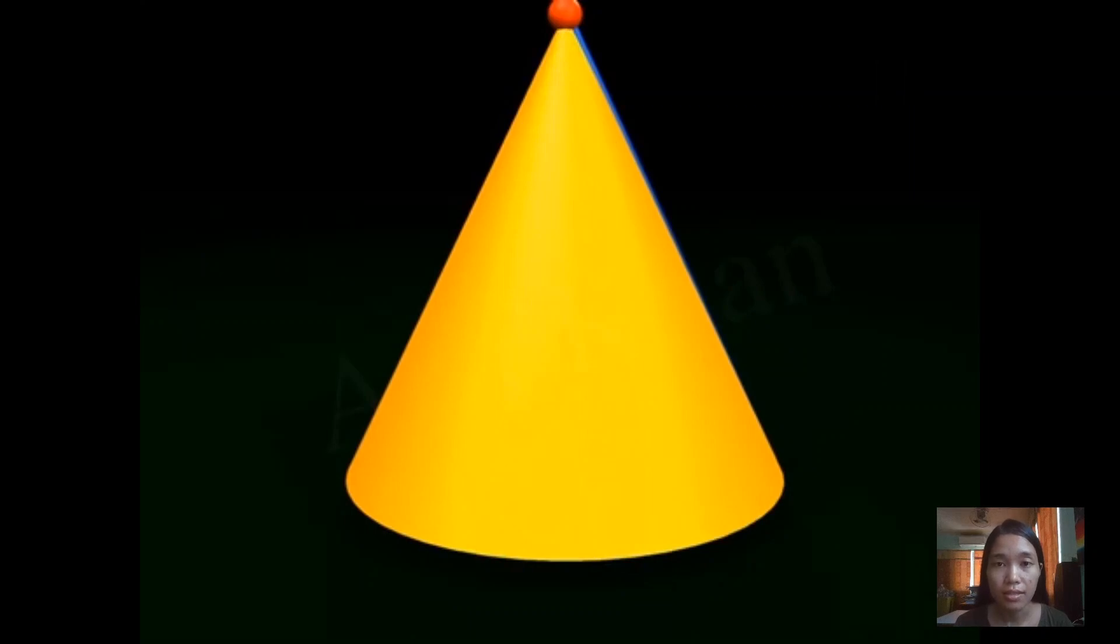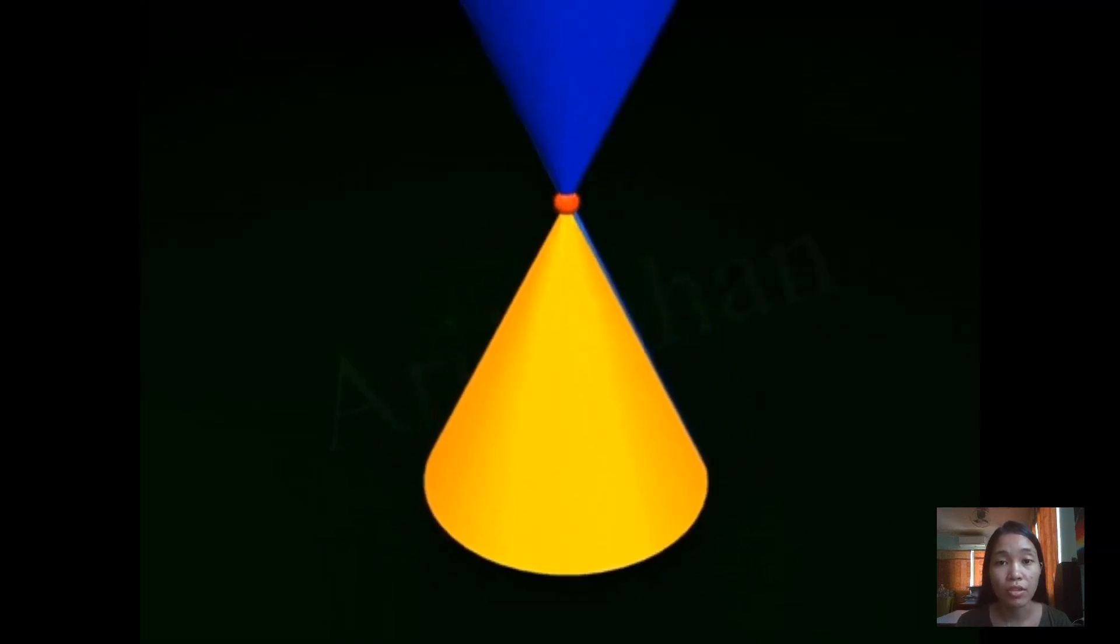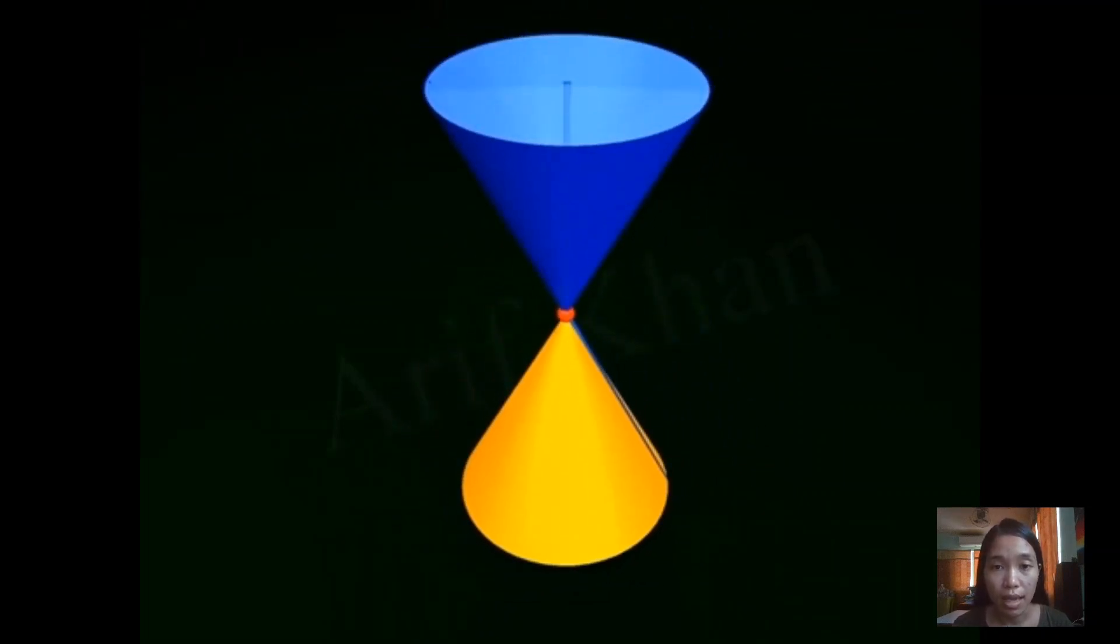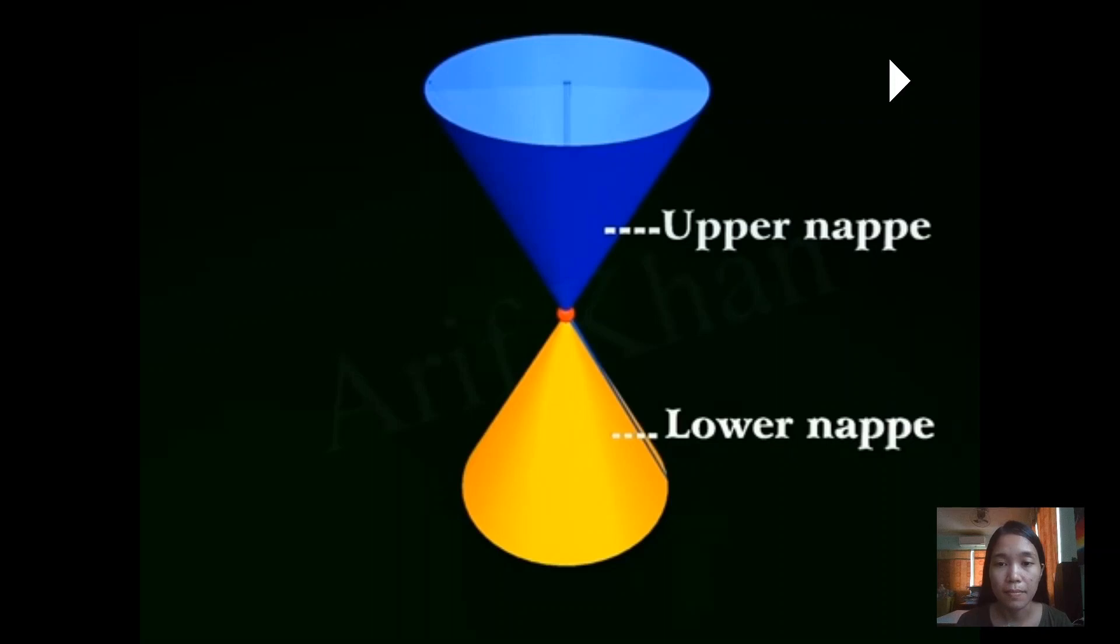And the lateral surface, if we were to wrap the double right circular cone, just the surface, we call that the nap. That means if it's a double right circular cone, we will have two naps. We call the top the upper nap, and of course the bottom we call the lower nap. Now with a double right circular cone, from vertex down to the circular base, the axis is always perpendicular to the base at the bottom, forming 90 degrees.